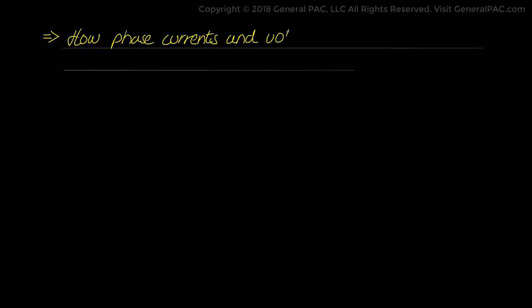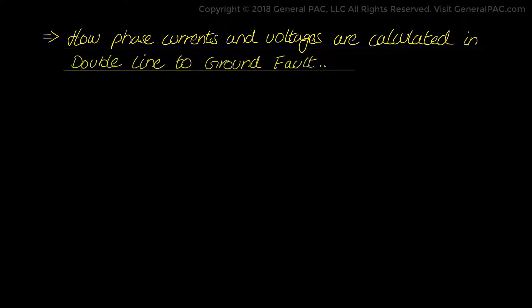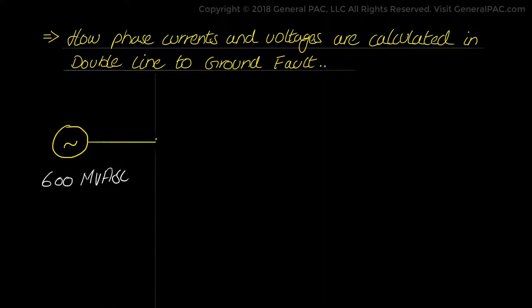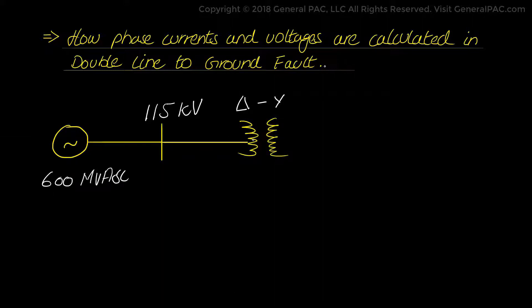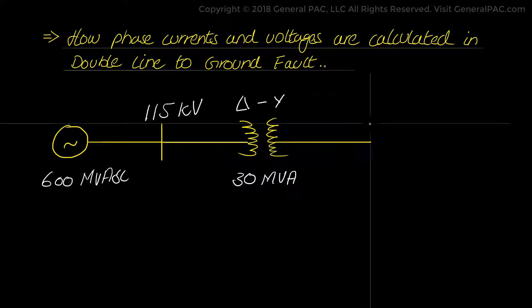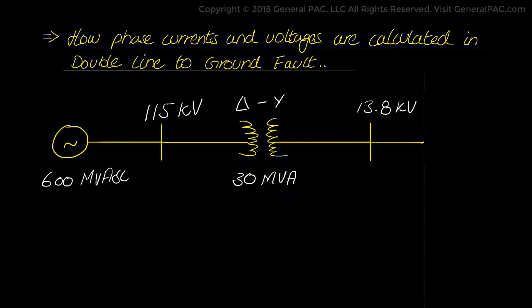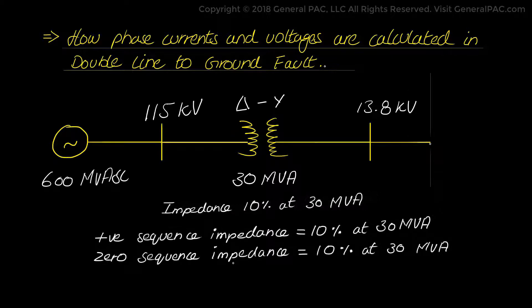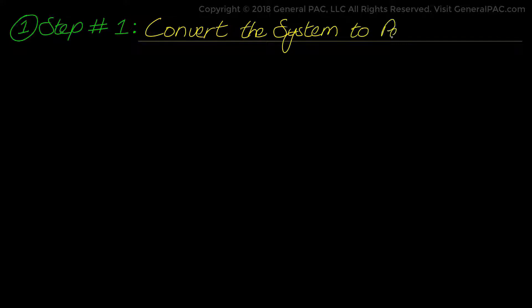In this video we will see how phase current and voltage quantities are calculated for a double line to ground fault on the 13.8 kV bus, which will involve phase B, phase C, and ground. We have a 3-phase synchronous generator having a short circuit capability of 600 MVA connected to a 115 kV bus, with a delta-Y transformer rated at 30 MVA connecting to the 13.8 kV bus. Step 1 converts our system into per unit values, as done in Part 2B.